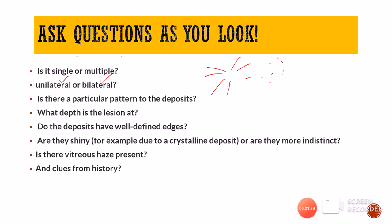What is the depth of the lesion? Are they subretinal or intraretinal? Do the deposits have well-defined edges — sharply cut borders — or are they very diffuse edges? Are they shiny? Because sometimes crystalline deposits will look shiny, while others have a more dull appearance. Is there any associated vitreous haze present with those hyperpigmented lesions?